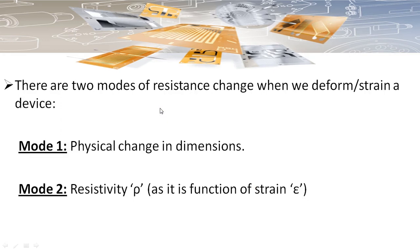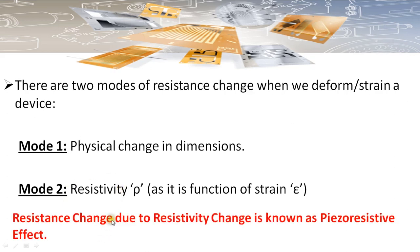When a material is subjected to strain, the resistance change occurs and this resistance change is contributed by mainly two modes. The first mode is changing the physical dimensions of the material, and the second mode is changing the resistivity of the material, because the resistivity changes as a function of strain. The resistance change in the material due to the resistivity change is known as the piezoresistive effect, and this sensor works on the principle of this piezoresistive effect.